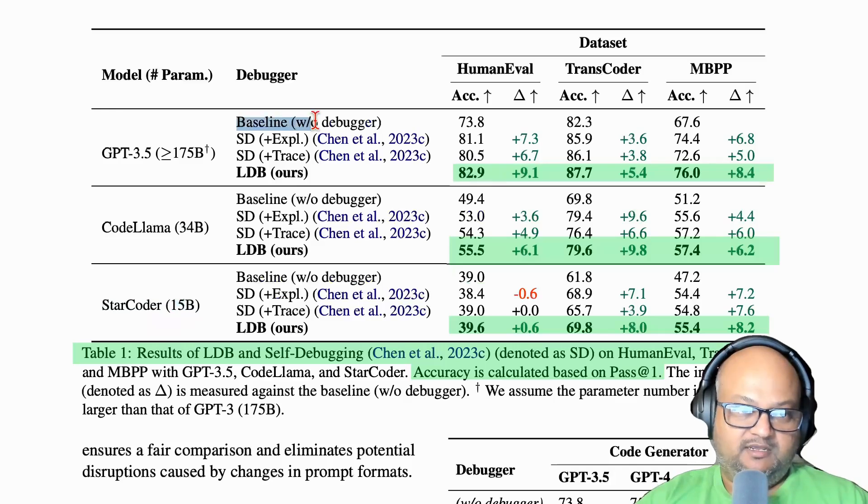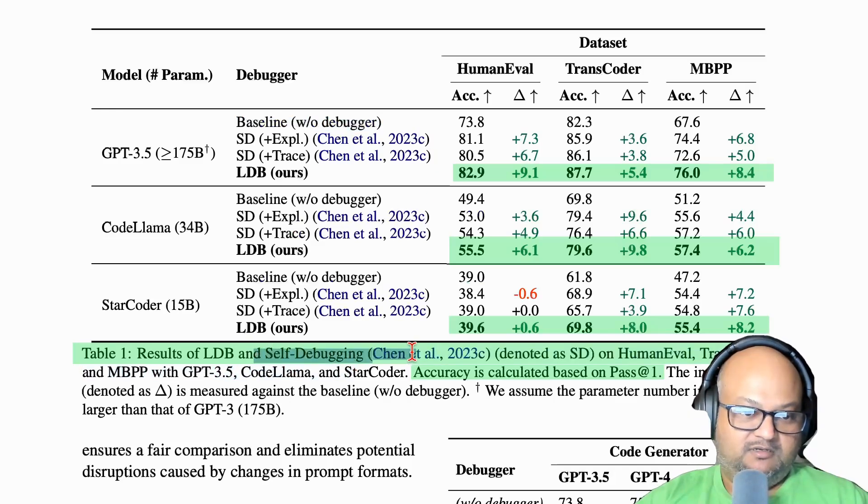They're comparing it with a baseline, which is no debugger, but also with another paper that has a technique called self-debugging. As you can see with this kind of debugging with execution traces, they get a nearly 10% bump on various coding benchmarks. The metric they're looking at is pass at one, so passing on the first try.